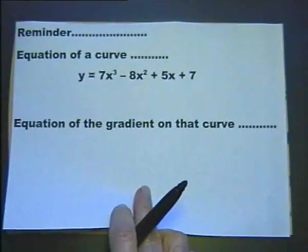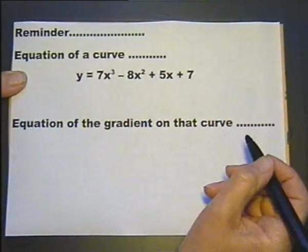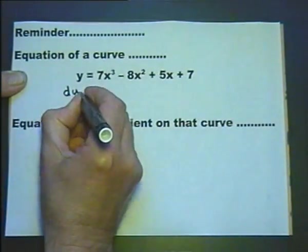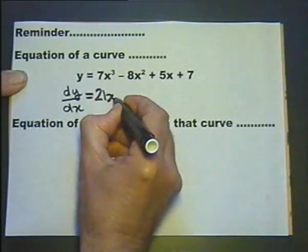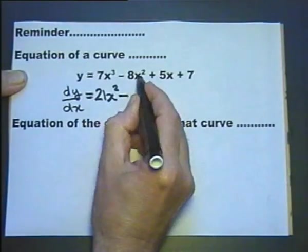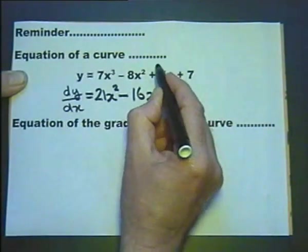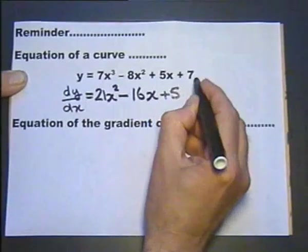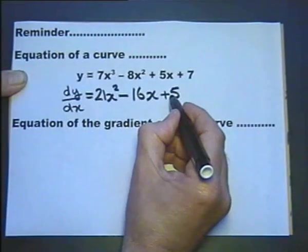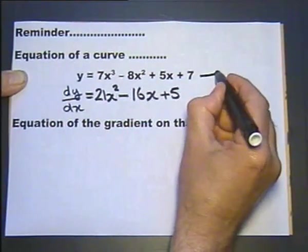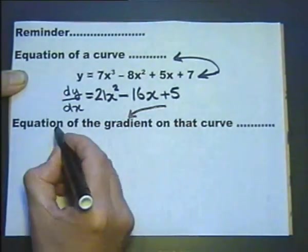Let's do a little reminder about differentiation. If we have the equation of a curve and we differentiate it, we get what we call dy/dx. So we differentiate: three-sevenths of x³ gives 21x², two-eighths of x² gives 16x, five-x differentiates to just five, and any constant disappears. This is called the derived function — the equation of the gradient.